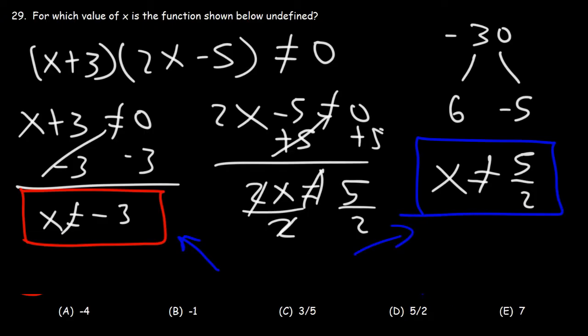So D is the answer, because 5 over 2 is listed. Negative 3 is not there.